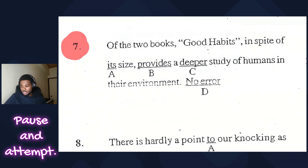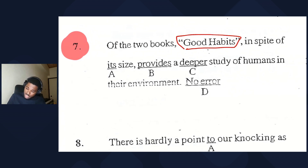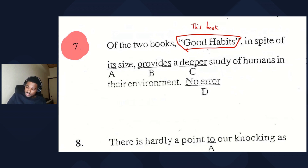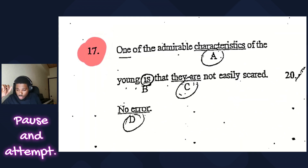Next: of the two books, Good Habits, in spite of its size, provides a deeper study of humans in their environment. The subject is 'Good Habits' — one book, singular, even though it has an S. So 'provides' is correct — no error here.